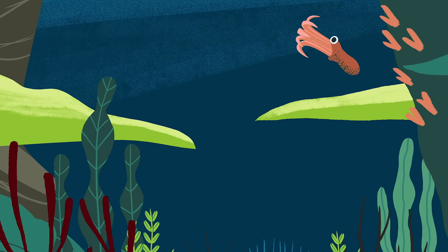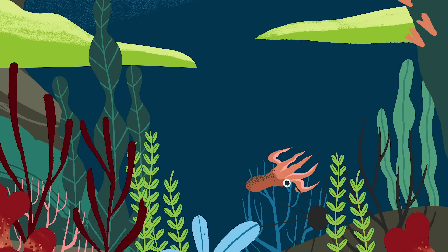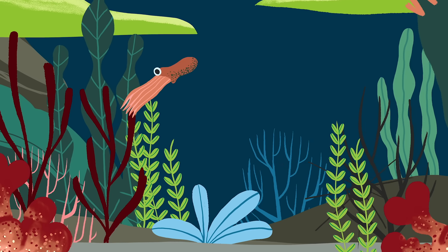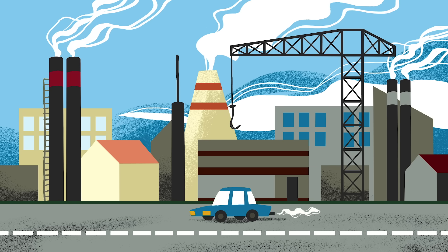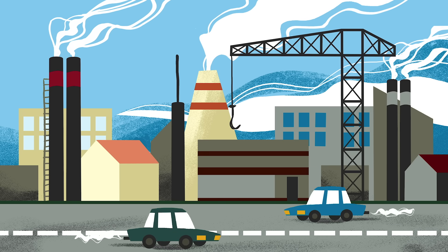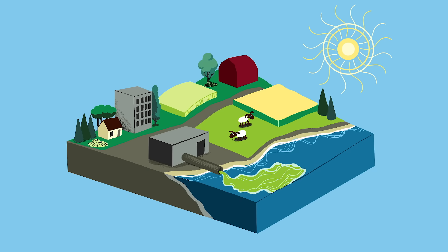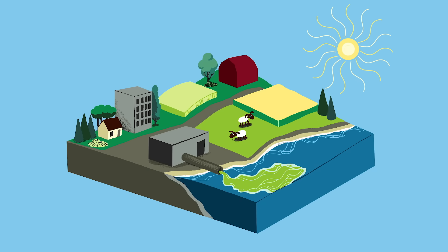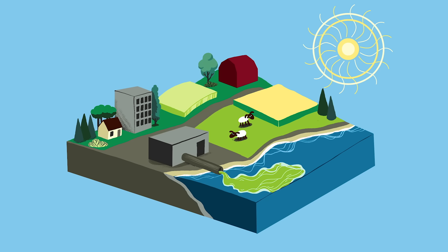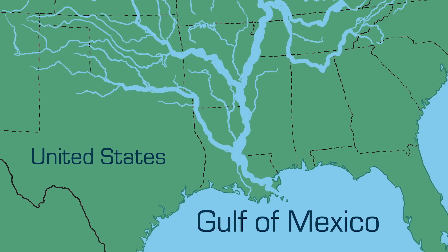Regions like the Bay of Bengal are full of bottom-dwelling marine life that has adapted to low oxygen conditions. But human activity has made eutrophication a regular and widespread occurrence. Nutrient-rich waste from our sewage systems and industrial processes often end up in lakes, estuaries, and coastal waters.